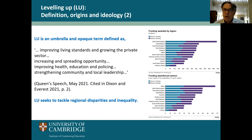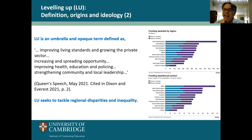If we want to find an actual definition of levelling up, we have to look at the Queen's Speech in 2021, where the government provided this umbrella definition of levelling up as something which is about improving living standards, growing the private sector, increasing and spreading opportunity, improving health, education and policing, and strengthening local leadership and the community. This umbrella term catches just about every aspect of government social policy, and it becomes what I'll describe later as a chimera — a fantastic beast for including every element of what the government does.